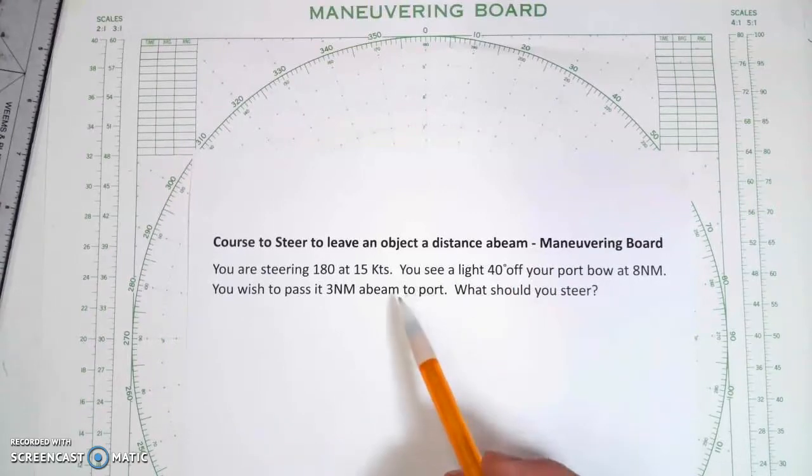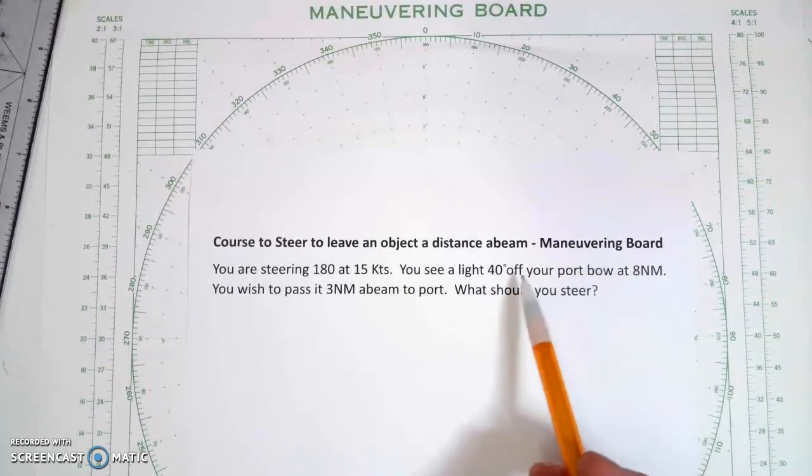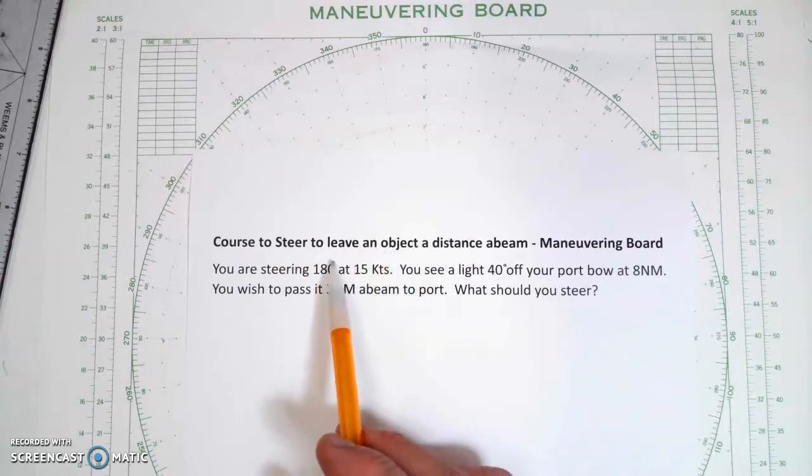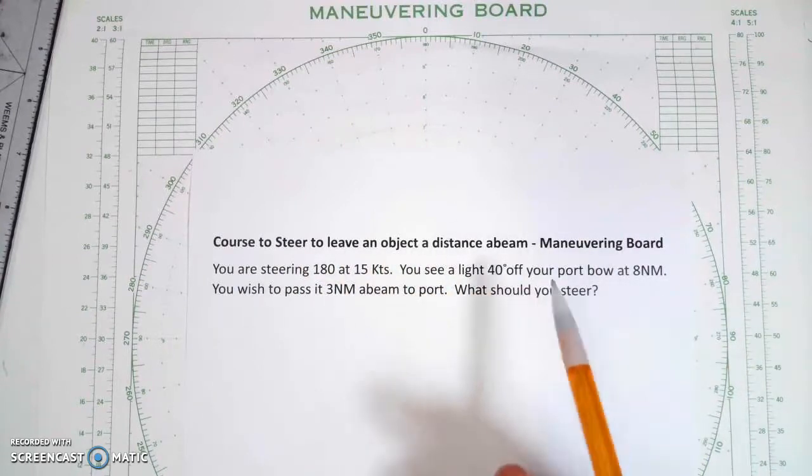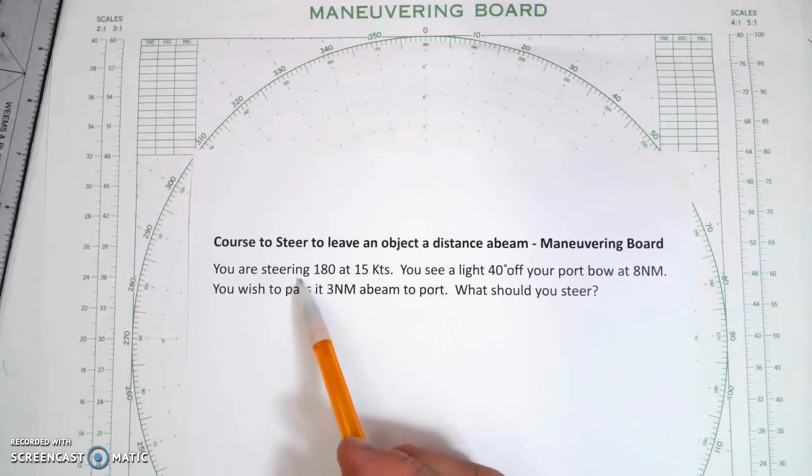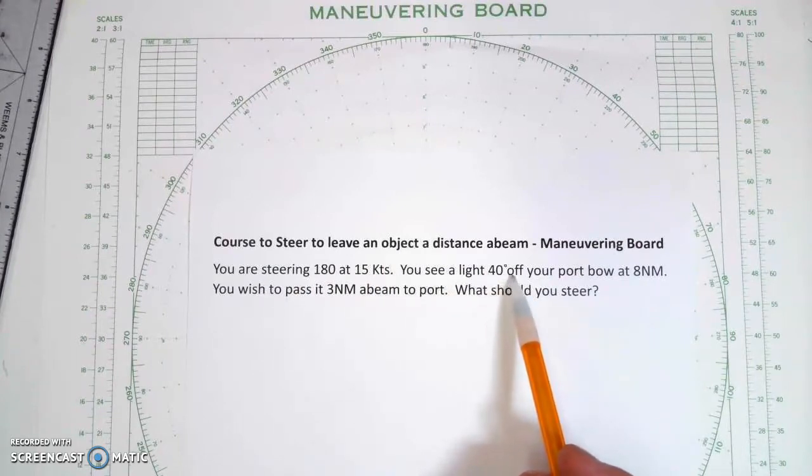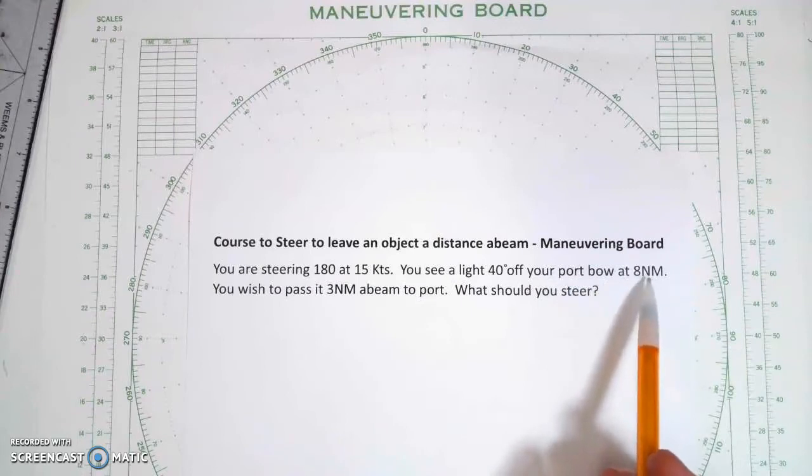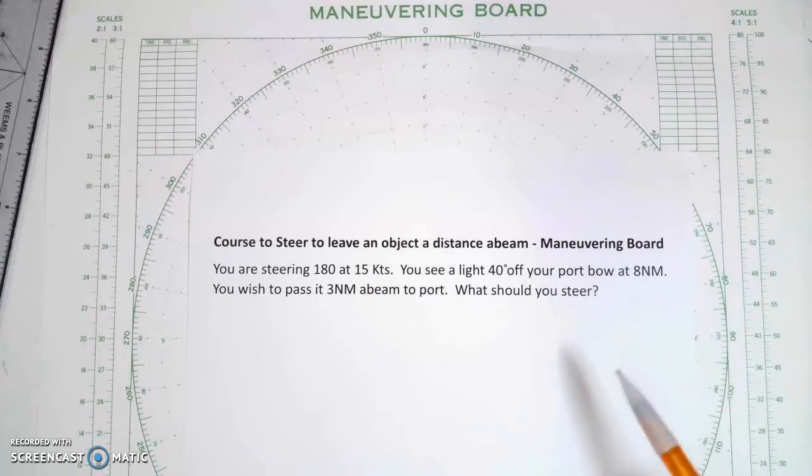In this problem, we're going to determine the course to steer to leave an object some distance off a beam using a maneuvering board. We're steering 180 at 15 knots. You see a light 40 degrees off your port bow at 8 nautical miles. You wish to pass 3 nautical miles abeam to port. What should you steer?